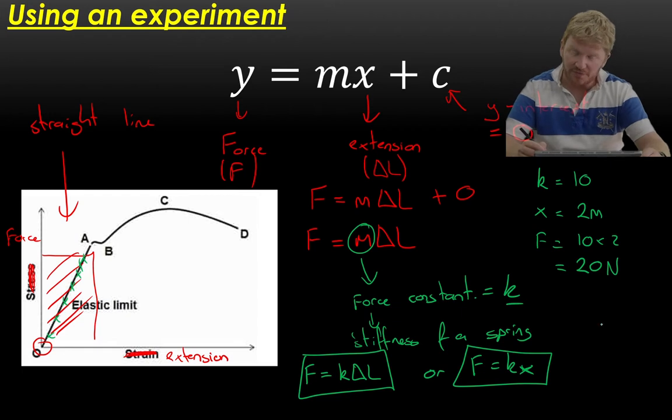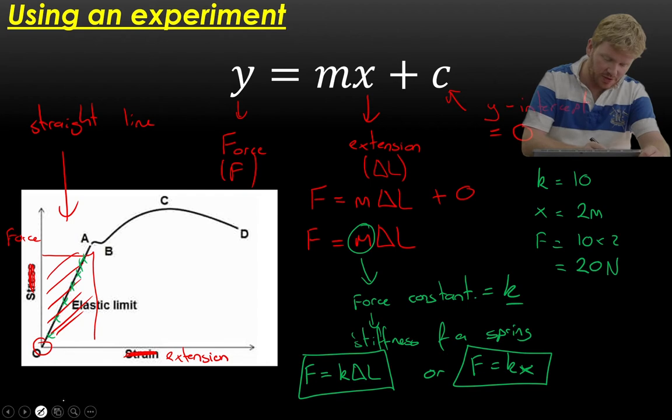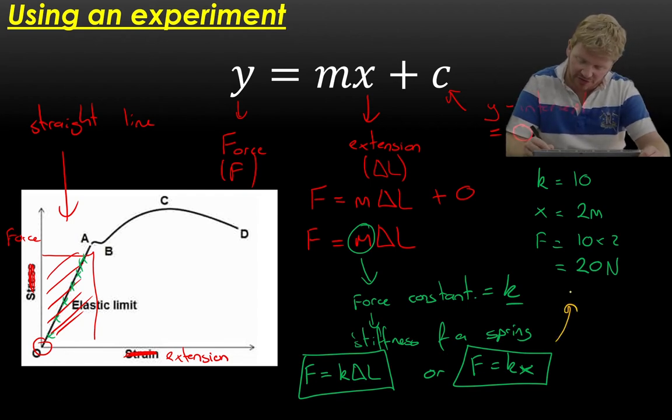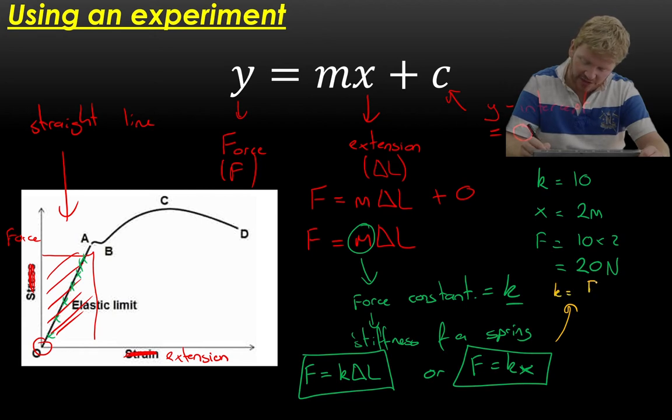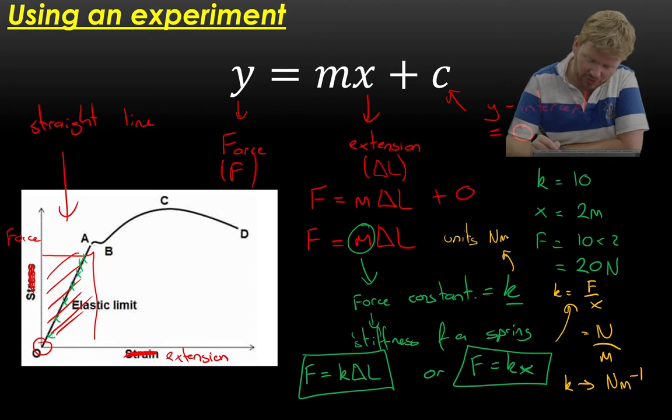So we're going to say that force is always in newtons. Extension must always be in meters. So what does K have to be in? This is your next A-level trick that's quite important to master. To find a constant, to find a value of something's units, what we're going to say is rearrange this equation into K equals. So I can rearrange this and say that K is equal to F divided by X. Now, F is measured in newtons, X is measured in meters. So I can say that K has the units of newtons per meter. And we always write per as the thing raised to the power of negative one. If you're not sure about why that is, ask me in our next lesson.